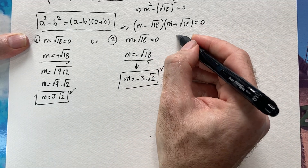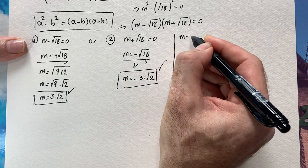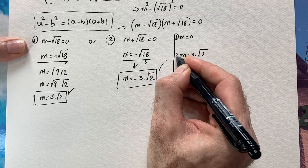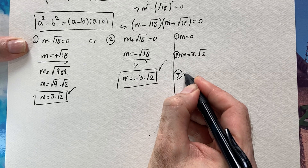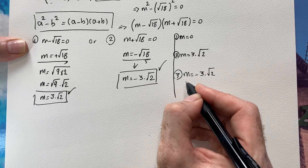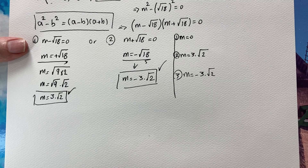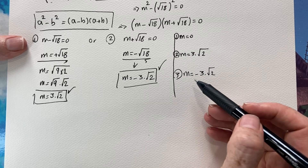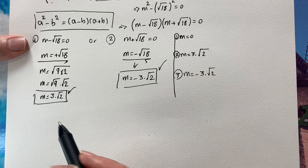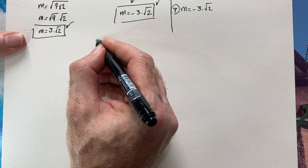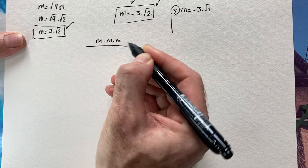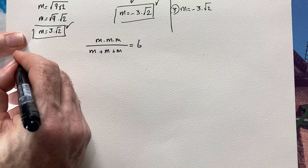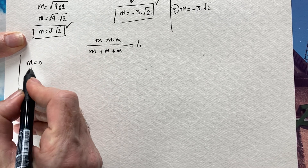So we have three candidate answers: m equals zero (answer 1), m equals 3√2 (answer 2), and m equals negative 3√2 (answer 3). Now we need to check whether they are valid by plugging them back into the original equation: m times m times m over (m plus m plus m plus m) equals 6.